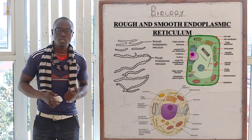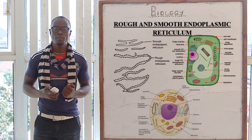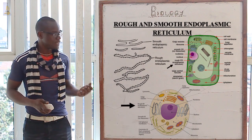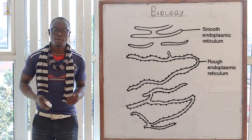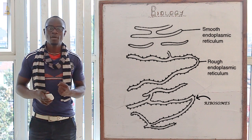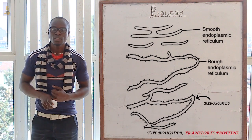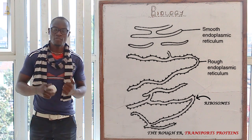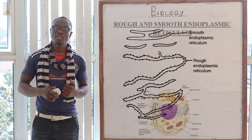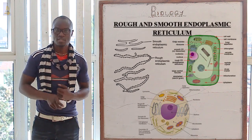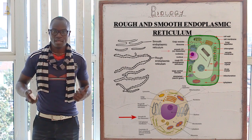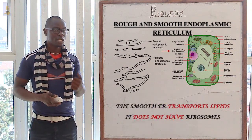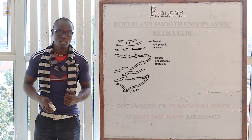We have two different types of endoplasmic reticulum. The first one is the rough endoplasmic reticulum, as you can see in the diagram. The rough endoplasmic reticulum contains ribosomes, and its function is to transport proteins. We also have the smooth endoplasmic reticulum, whose function is to transport lipids.